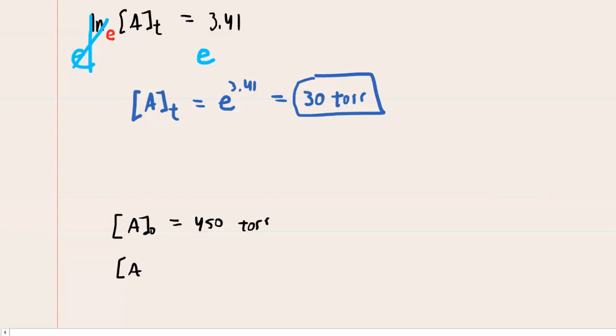The initial value, again, for the pressure was 450 torr. The question notes that the final pressure is going to be one-tenth of the initial. So what you'll do is take one-tenth and multiply that by the initial pressure. And when you do that, you would get 45 torr.